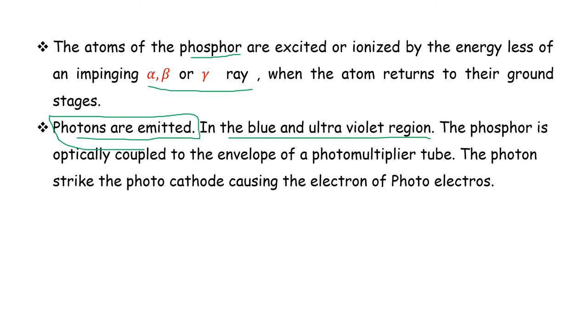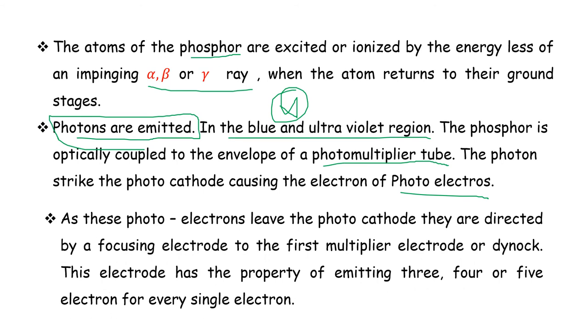The phosphor is optically coupled to the envelope of a photomultiplier tube. The photons strike the photocathode causing the emission of photoelectrons. These are very important points.